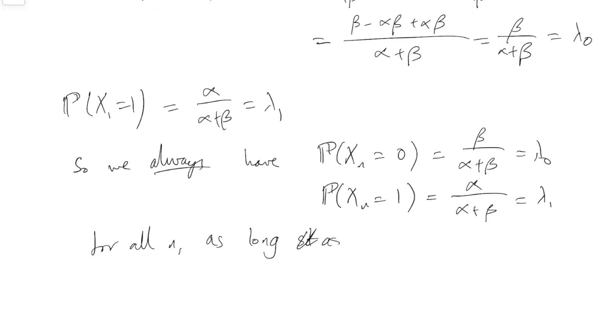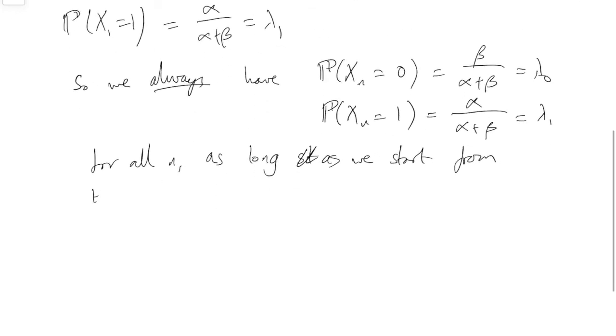as long as we start from the distribution lambda 0, lambda 1. So we could call this a stationary distribution, right? Because if we start there, it also describes the distribution at time 1 and at time 2, and at time 3, and at time 4, and at time 5. So we could call that a stationary distribution.